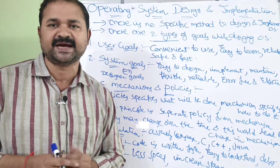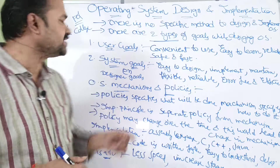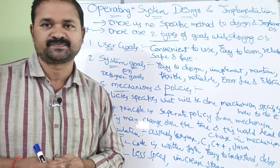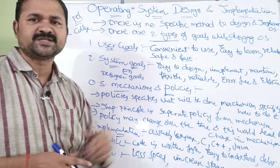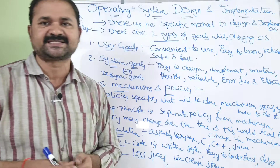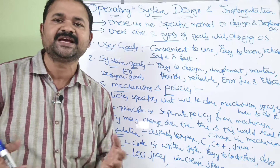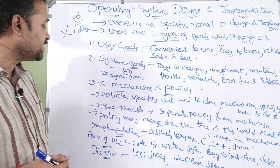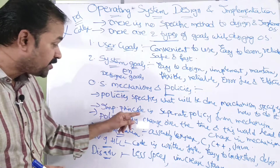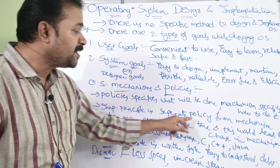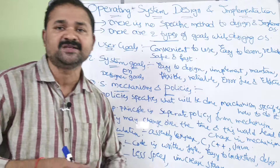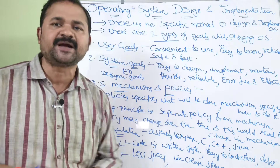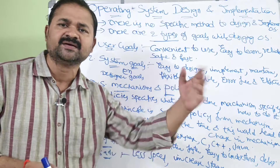Policy means what will be done. Today our target is developing an app for a college, and how to achieve that policy is done through mechanisms like requirements analysis, designing, coding, implementation, and testing. Our major aim here — the important principle — is to separate the policy from the mechanism. We need to separate both policy and mechanisms so that those two are independent.